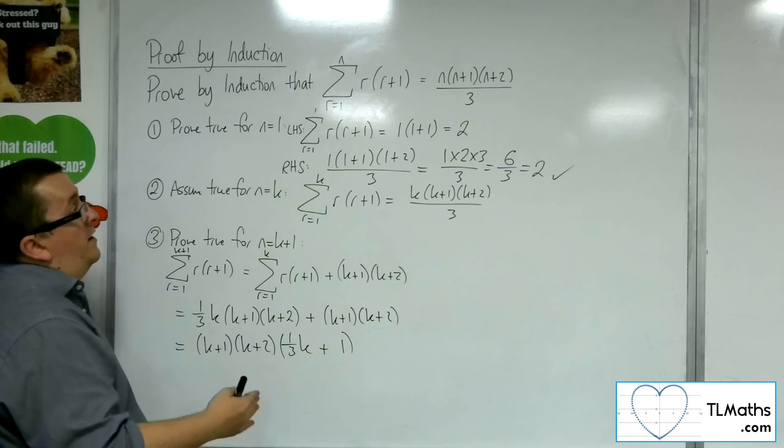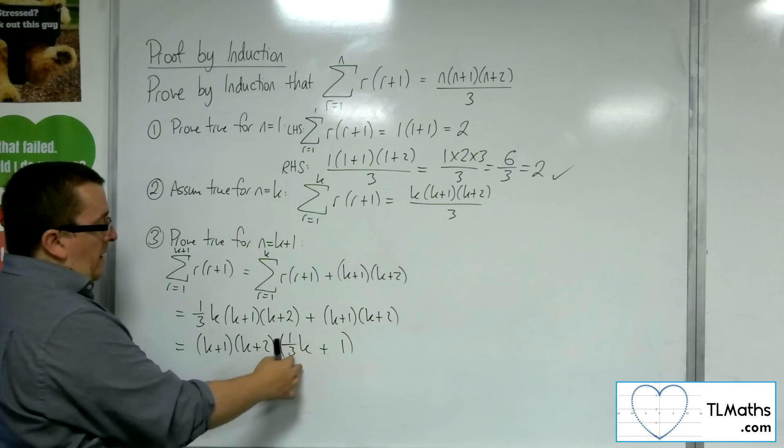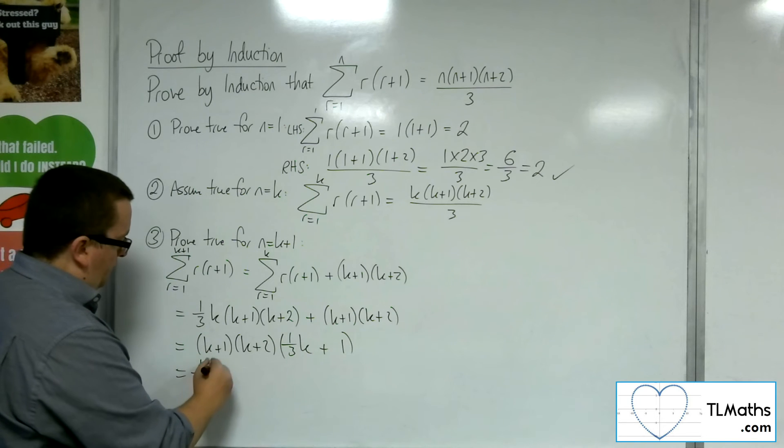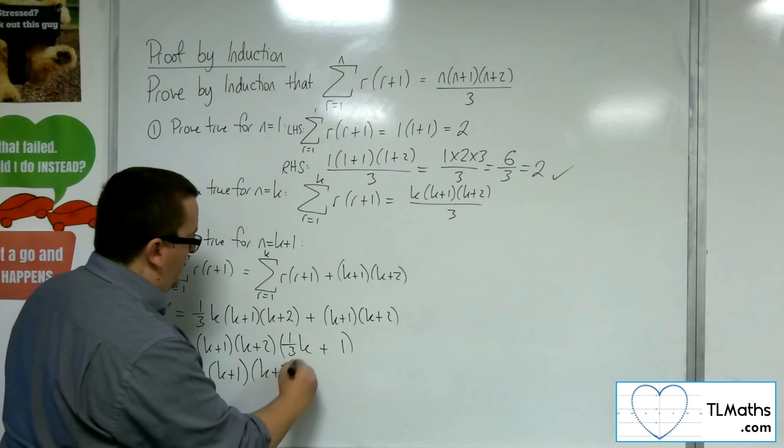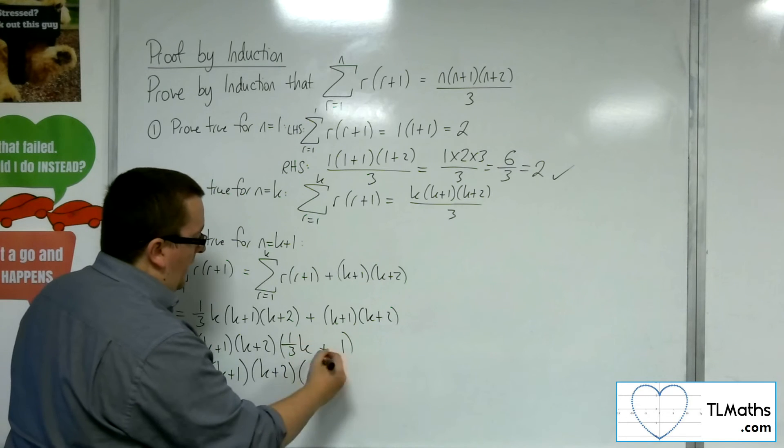Now we want a third out the front. So I'm going to factor the third out. And that means I've got to multiply what's in the side of that bracket by 3. So I get k plus 3.